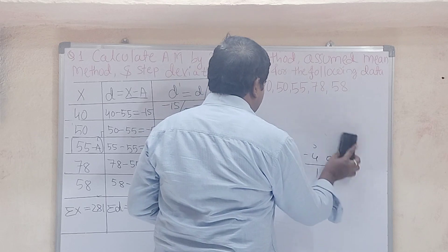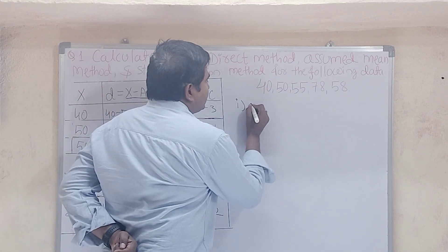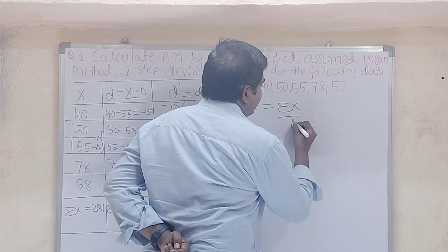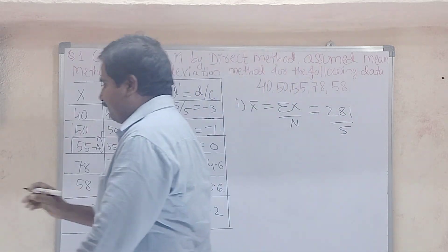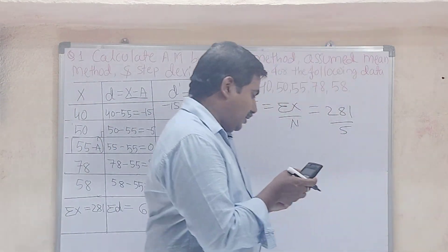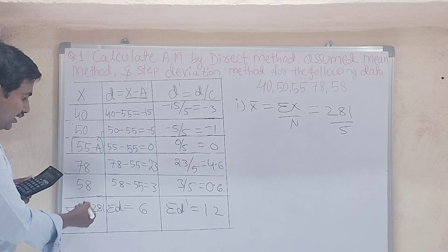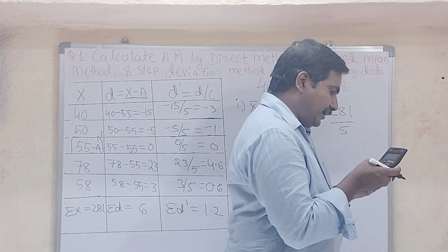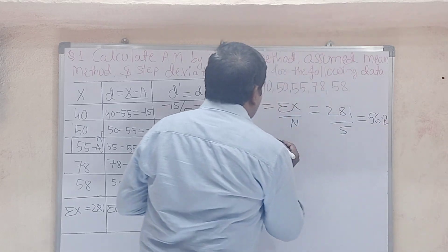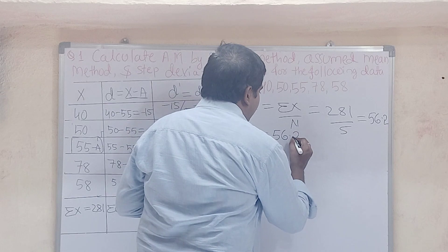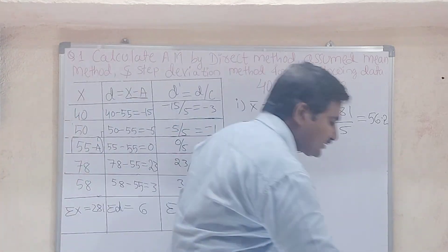Now we calculate using three methods. First method — direct method: X bar equals summation X divided by N. We have summation X = 281 and N = 5. Using a calculator: 281 ÷ 5 = 56.2. So X bar = 56.2.